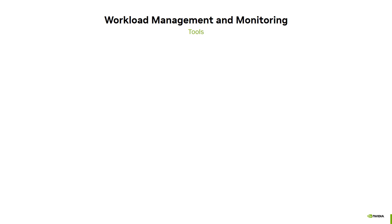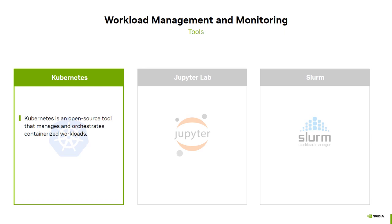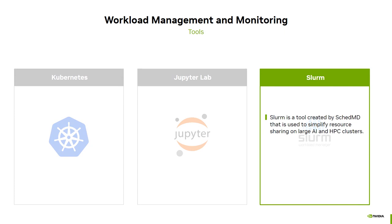There are a variety of tools used for workload management. Many of these tools also include monitoring capabilities or share job metrics with other tools. Some of the more common workload management tools are Kubernetes, JupyterLab, and Slurm. Kubernetes is an open-source tool that manages and orchestrates containerized workloads, with operators that allow it to work with NVIDIA GPUs, share metrics with Prometheus, and integrate with advanced schedulers like RunAI. Jupyter is an open-source web application used by data scientists and machine learning professionals to create and share computational documents like code and data visualizations, and can be launched and run from within containers. Slurm, created by SchedMD, simplifies resource sharing on large AI and HPC clusters — it's an advanced scheduling tool that can run interactive and batch jobs, prioritize jobs, and allows for resource reservations and per-job quality of service settings.